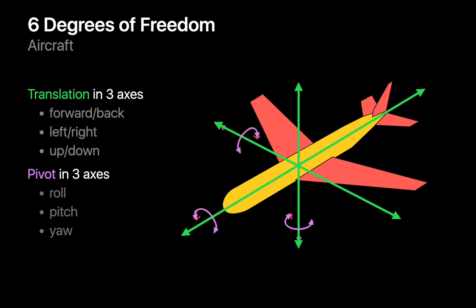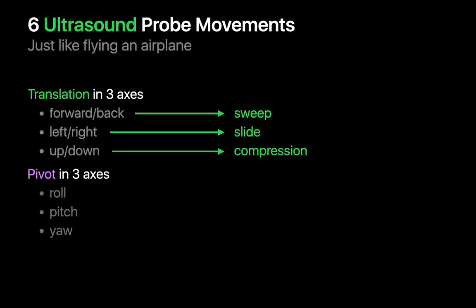Just like with an aircraft, there are six degrees of freedom when moving an ultrasound probe. You can translate the probe in three axes.